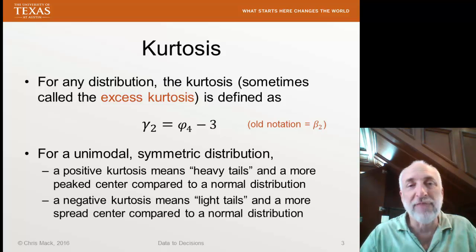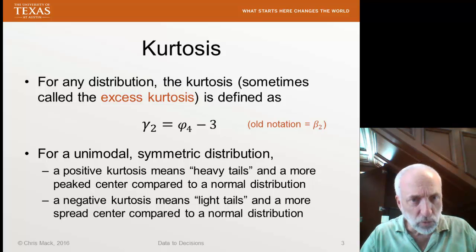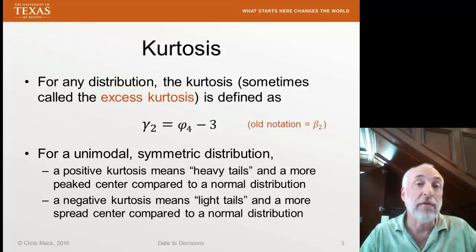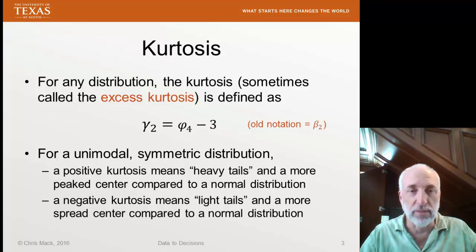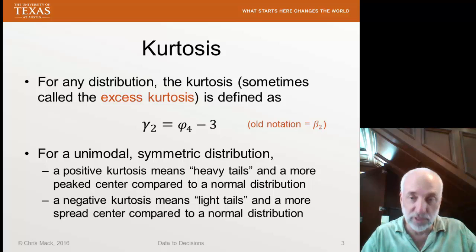How can we interpret the value of the excess kurtosis? Well, if we have a unimodal distribution and it's symmetric, that is it has a gamma 1 of 0, a skewness of 0, then it's very easy to interpret the value, the meaning of gamma 2. A positive excess kurtosis means heavy tails. It means the tails are heavier than a normal distribution. And a negative kurtosis means light tails. The tails are lighter than a normal distribution.